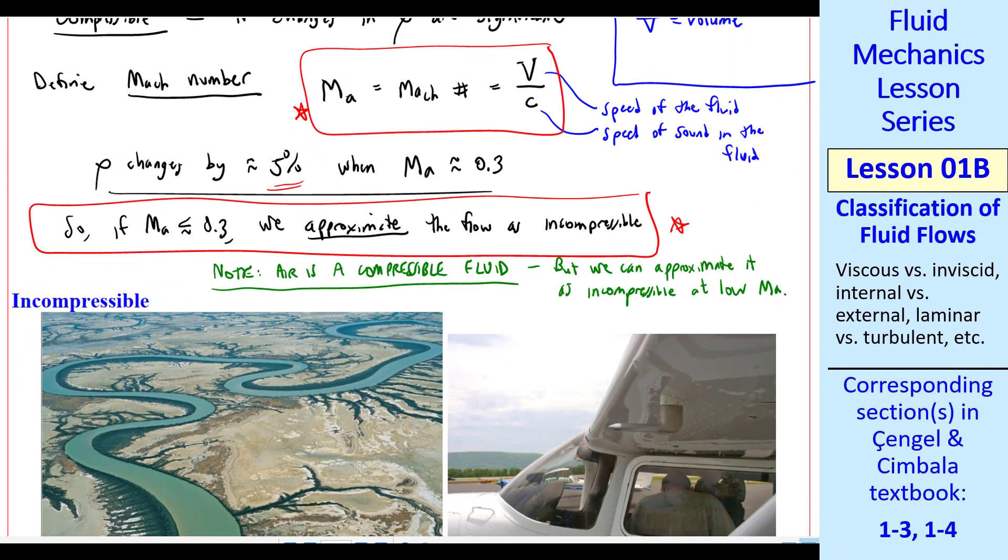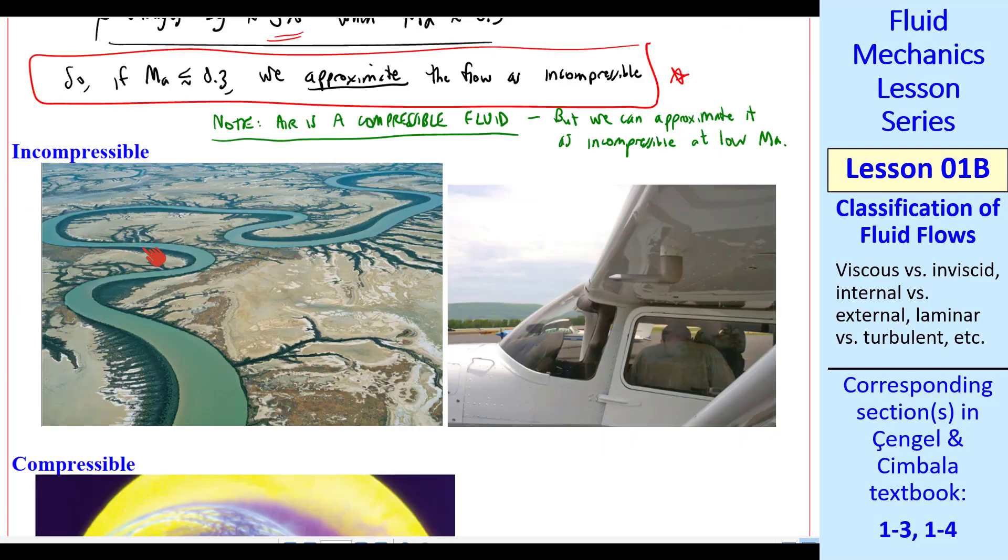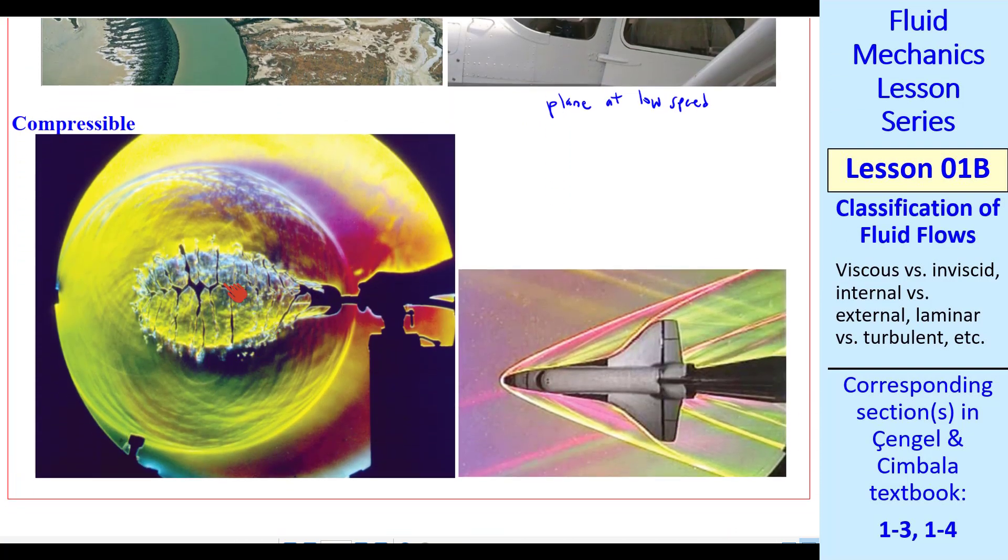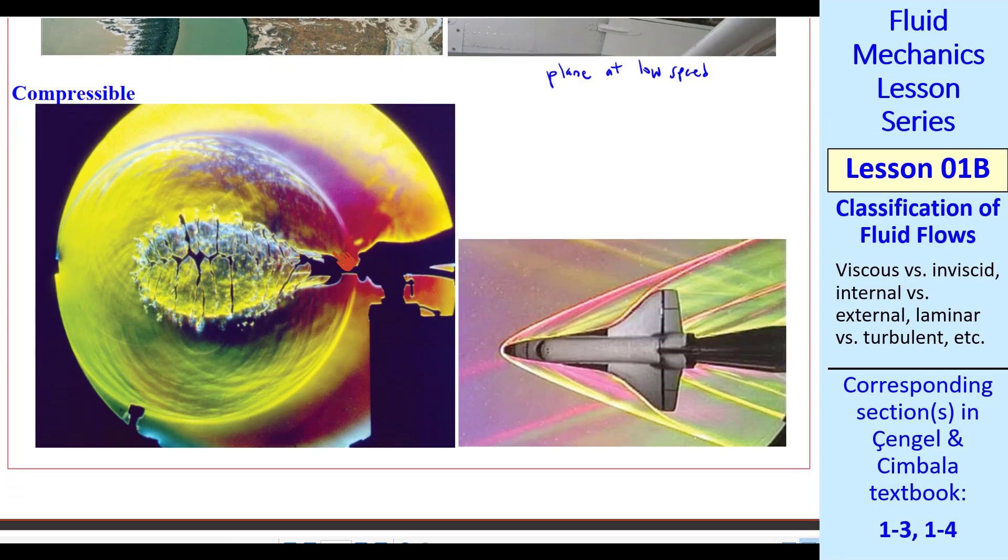Here are some examples. A river meandering through the land is incompressible. That's a liquid. A small plane like the one shown here that might fly at maybe 100 miles per hour is still low speed. The Mach number would be much less than 0.3. Some examples of compressible flow. Here's a cool Schlieren image of a balloon exploding, and you could see things like a shock wave forming here that expands out. This is definitely compressible. This is an unsteady flow, and this shock wave is moving radially outward from this explosion.